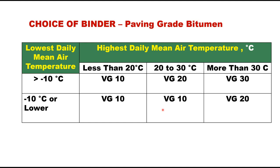The choice of binder can be either paving grade or emulsion. For paving grade binder, where the lowest daily mean air temperature is more than minus 10°C and highest daily mean air temperature is less than 20°C, VG10 is preferred. Similarly, depending upon climatic conditions, you can choose the grade of paving bitumen.